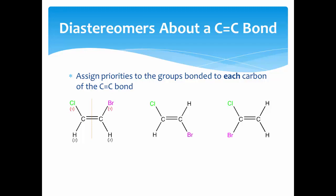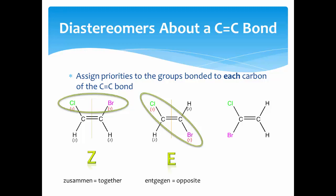Once you have priorities determined, then you see if the highest priority groups are on the same side or opposite sides of the double bond. If they are on the same side, we call it Z, for the German word zusammen, meaning together. If they are on opposite sides, we call it E, for the German word entgegen, meaning opposite.